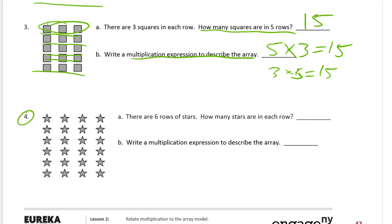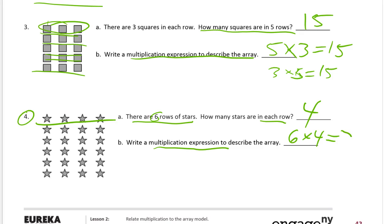Now we'll go down to number four. There are six rows of stars. How many stars are in each row? There's a row right there and there's four stars in that row — and they're all the same, so there's four in every row. Write a multiplication expression to describe the array. An expression is just a number sentence — expressions don't even have to have equal signs, really. So we're just going to write a multiplication sentence. We've got six rows of stars, so that's six times four in each row. And you can count them all to find out there's 24 stars.